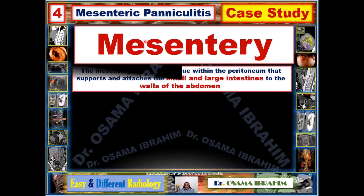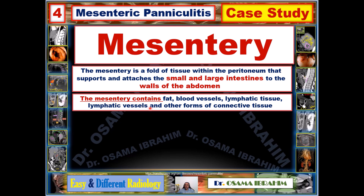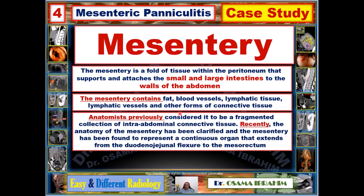The mesentery is a fold of tissue within the peritoneum that supports and attaches the small bowel and large bowel to the anterior abdominal wall. It contains fat, blood supplies, lymphatic tissue, lymphatic vessels, and other forms of connective tissue.